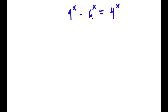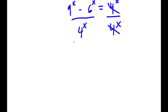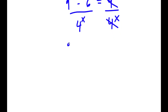What I'm first going to do is divide both sides by 4 to the power of x. So now I have 9 to the power of x minus 6 to the power of x, all over 4 to the power of x, is equal to 4 to the power of x over 4 to the power of x. These two cancel out, giving us 9 to the power of x minus 6 to the power of x over 4 to the power of x is equal to 1.